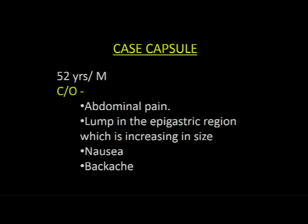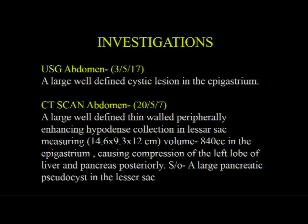22-year-old male patient complaining of abdominal pain, a lump in the epigastric region which is increasing in size, nausea, and backache. Ultrasound abdomen revealed a large, well-defined cystic lesion in the epigastrium. CT scan abdomen showed a large, well-defined, thin-walled, peripherally enhancing hypodense collection in the lesser sac, measuring 14.6 x 9.3 x 12 cm, volume 840 cc, causing compression of the left lobe of liver and pancreas posteriorly, suggestive of a large pancreatic pseudocyst in the lesser sac.